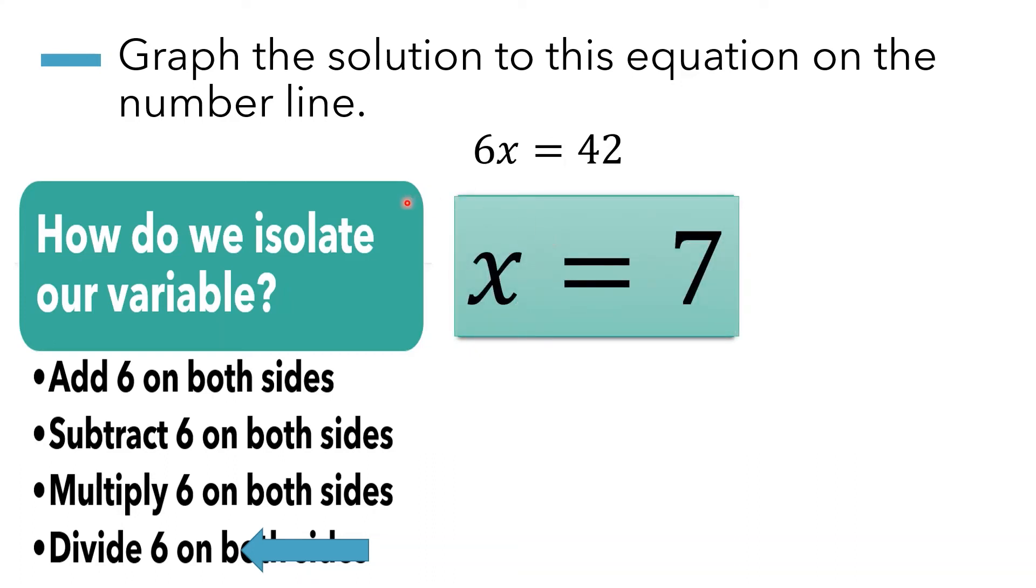x equals 7. You should have got this answer when you divide 42 by 6. x is isolated by itself. This is our solution, and we can see that it equals 7.